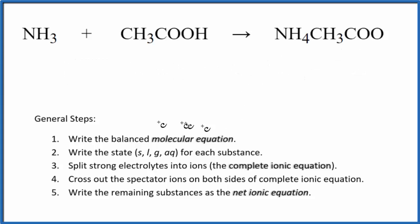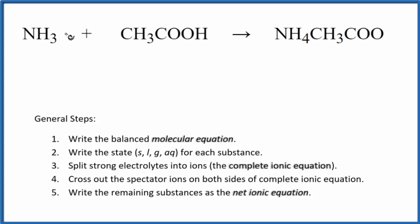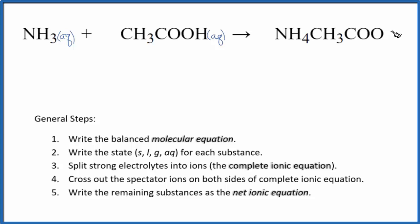We balance the molecular equation first, and it turns out that this is already balanced. Then we need to write the states for each substance. Ammonia will dissolve in water, so we write aqueous. Acetic acid will also dissolve in water — that'll be aqueous. Compounds with the ammonium ion and the acetate ion are very soluble; they'll dissociate as strong electrolytes, so we write AQ after that as well.